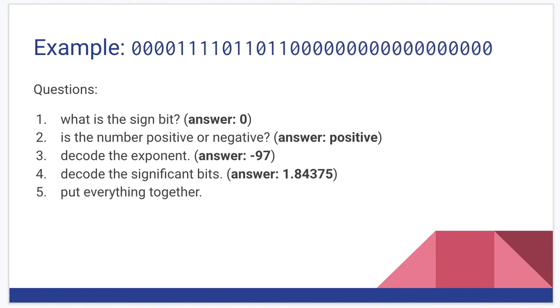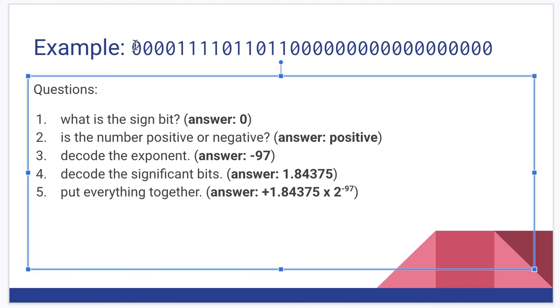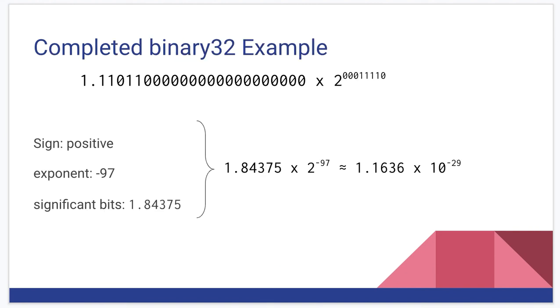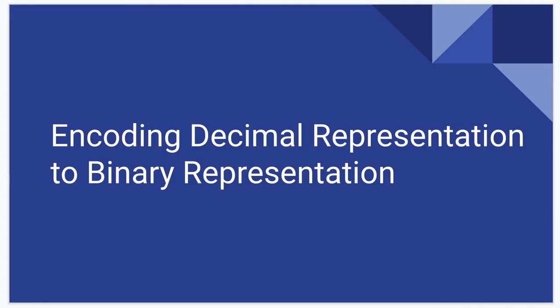If we decode the significant bits. Now we can put everything together and we have positive because it was a positive sign bit, 1.84375 times two to the negative 97. If we multiply that out, which I've done here, it comes out to something like 1.1636 times 10 to the minus 29, if we go to a more conventional decimal representation.